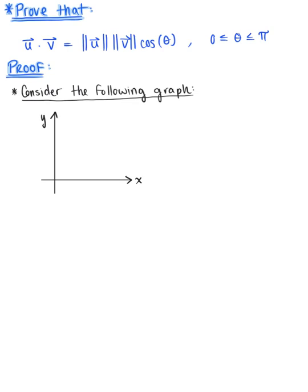To do this, I want to begin by considering a graph in the xy-plane. We have vector u and vector v, and we know that angle theta is between these two vectors. In order to verify equivalence, we need to create a triangle using our two vectors u and v.